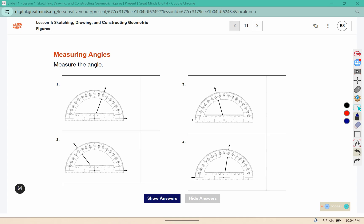So for an acute angle, meaning one that is smaller than 90, pay close attention to what number on the protractor you need to use.